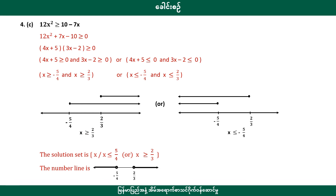12a squared greater than or equal to 10 minus 7x. So when you're going to rearrange, 2a squared plus 7x minus 10 will be the expression. So when you factor, you get 4a plus 5 times 3a minus 2.